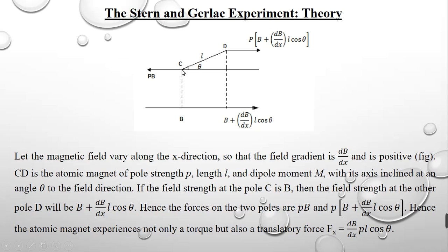Due to this magnetic field, the force experienced by the dipole at point C is given by P into B. The force experienced by the dipole at point D due to the magnetic field B plus dB/dx·L·cos theta is given by P into (B plus dB/dx·L·cos theta). From these two values, the P·B components acting in opposite directions constitute a torque, whereas the additional quantity P into dB/dx·L·cos theta is the translatory force.